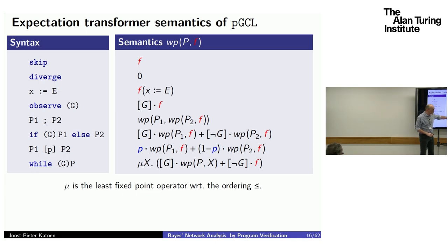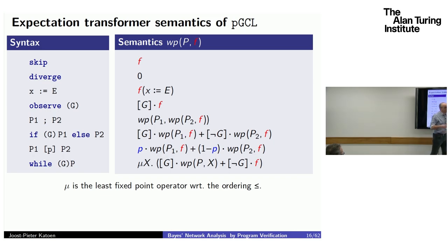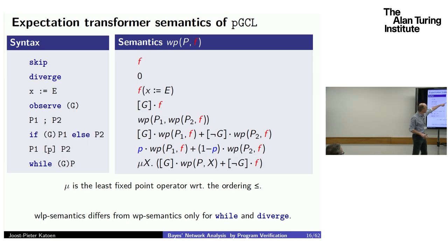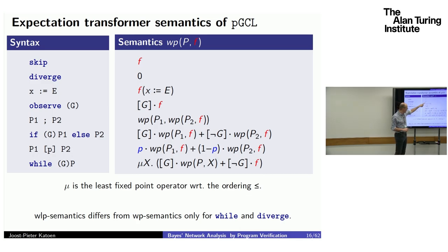The semantics of a loop is the least fixed point over the domain of expectations with the point-wise ordering. As long as the guard holds, you need WP of the loop body; if the loop terminates, you establish the postcondition. The WLP semantics fits on the same slide with two changes: for diverge it becomes 1 because the probability of diverging is 1, and for loops you take the greatest fixed point rather than the least fixed point.